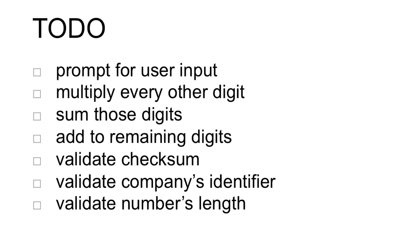Let's check your credit. In this problem, we'll prompt the user for an input of a credit card number. Then we'll run that credit card number to see if it's valid. If so, we'll print the company that that credit card belongs to. Otherwise, we'll tell the user that that card is invalid.